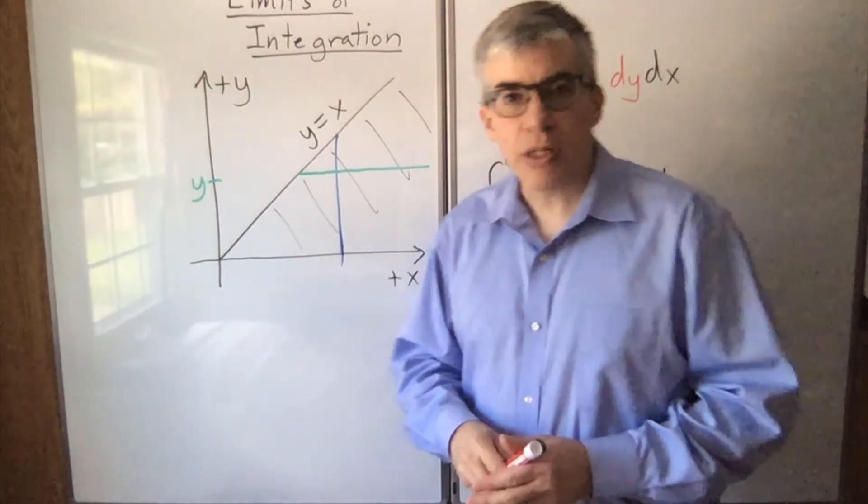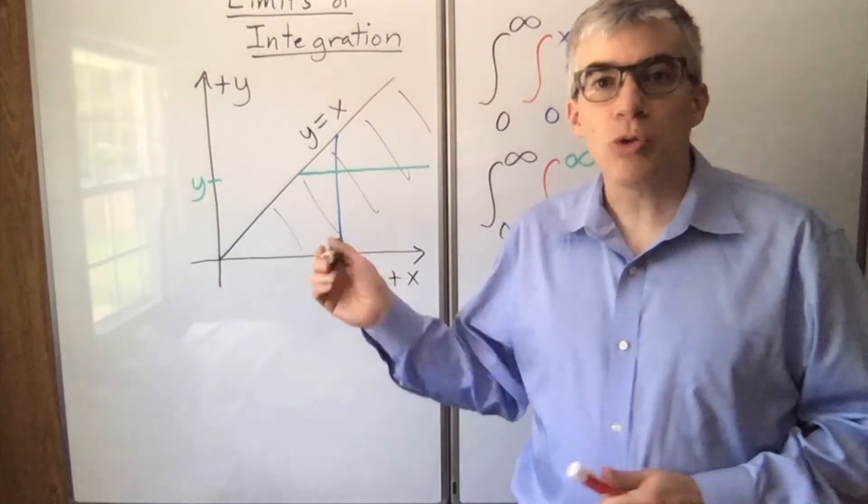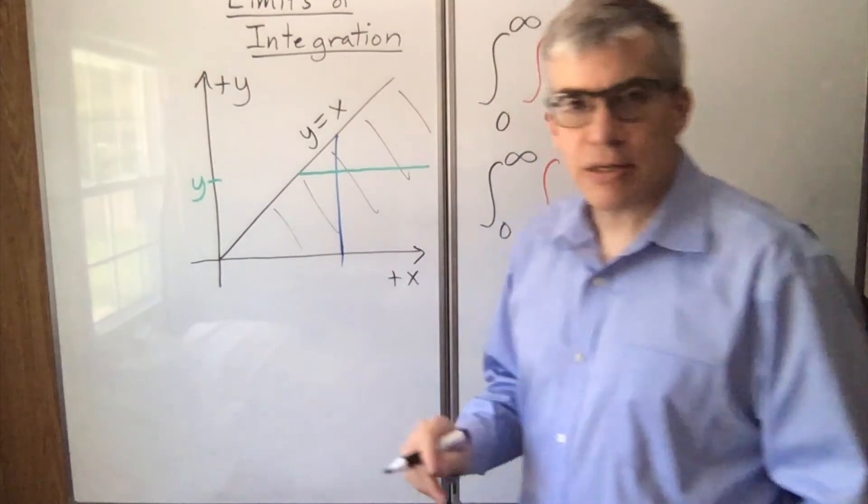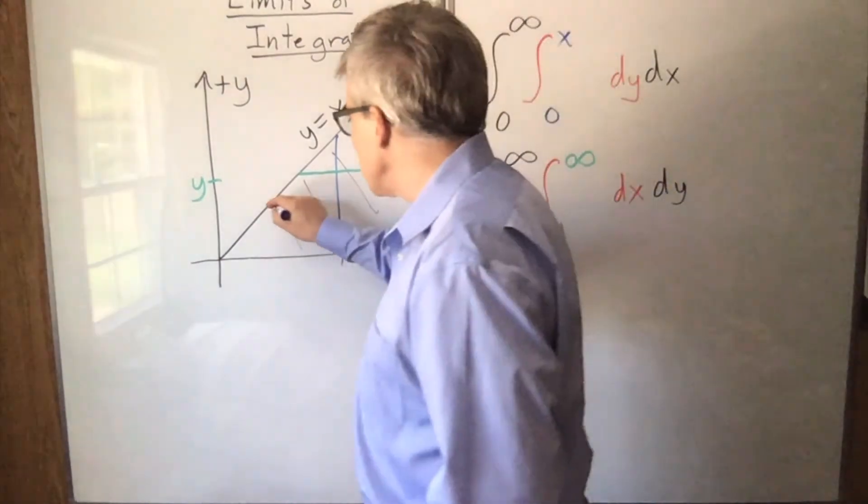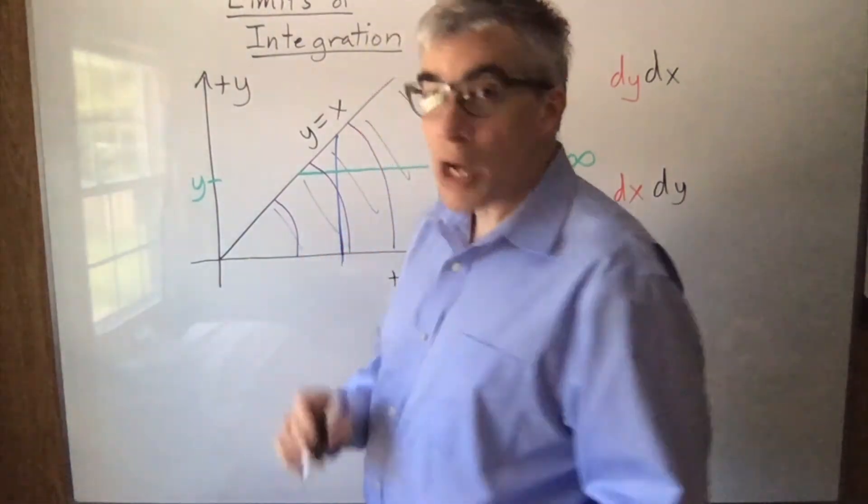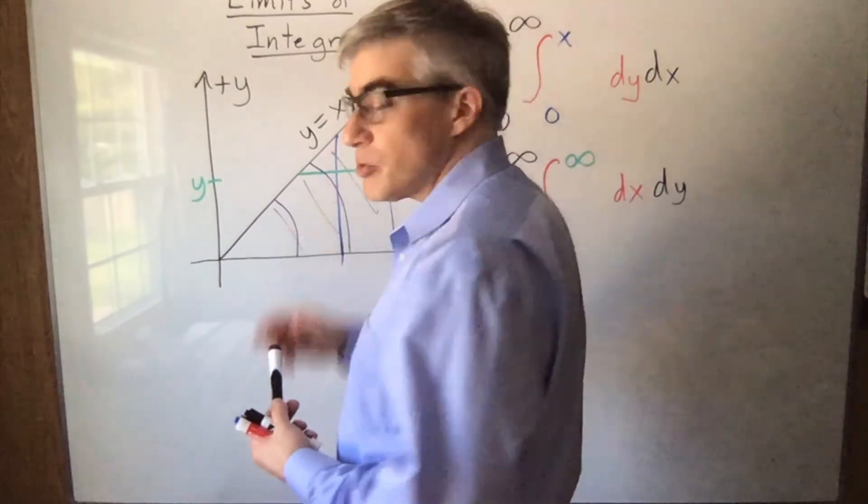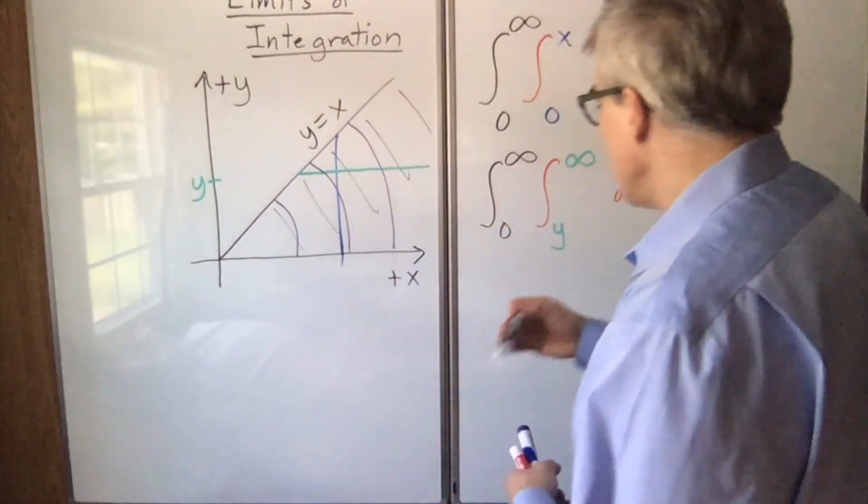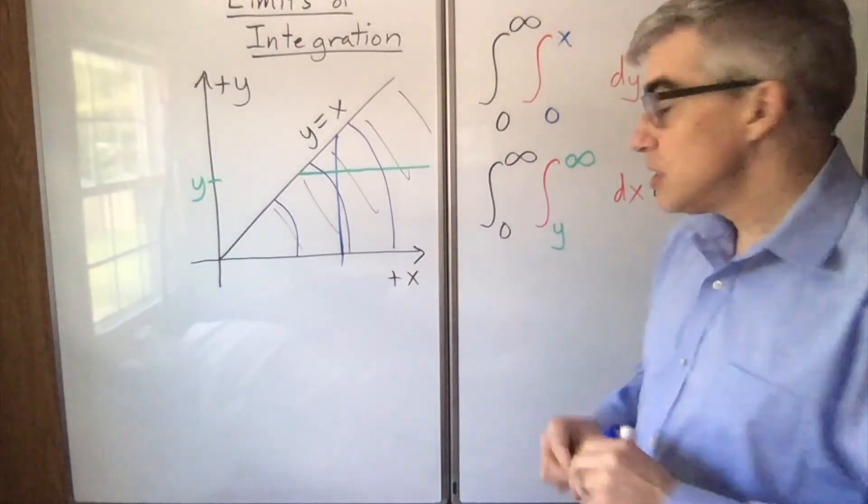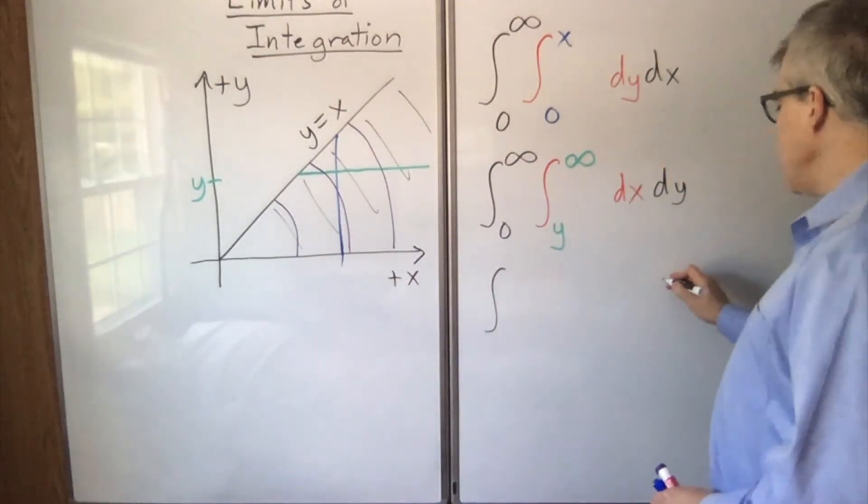While I have this example, I want to jump tracks a little and show you yet another way using polar coordinates. In polar coordinates, this is actually a simple integral. Because we're talking about an angle that simply ranges between two constant values and a radius that ranges from 0 to infinity. So in fact, this is the polar form of a rectangle, so the order of the limits doesn't matter.